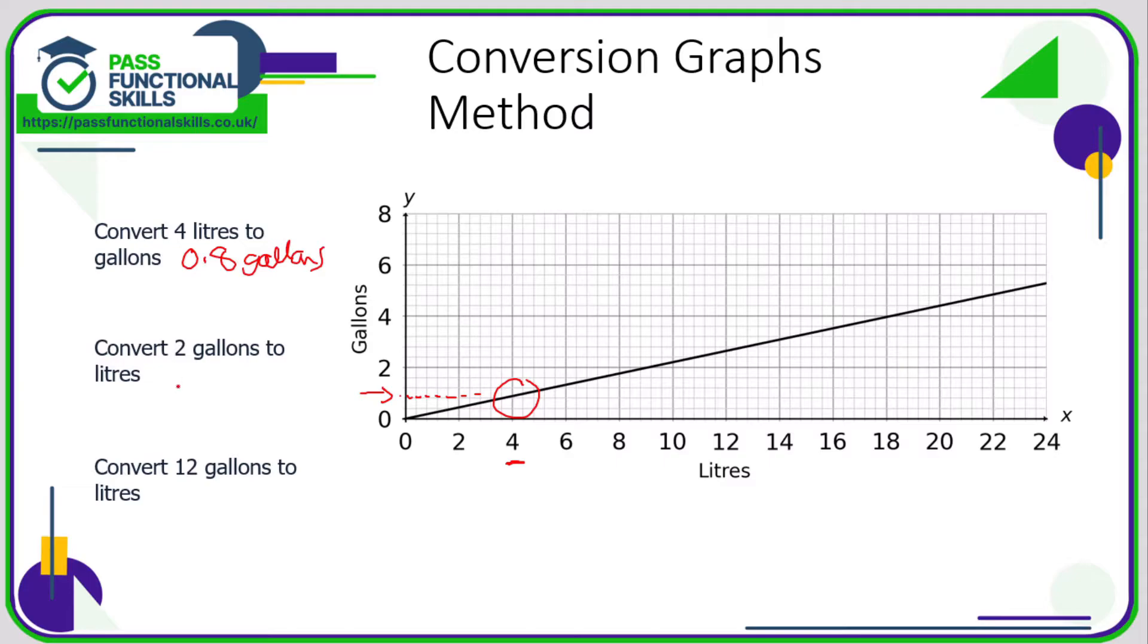We need to be careful that we're going from the correct axis. Gallons is up the side, so we need to start at two up the side. This is two gallons and go across to our graph and it hits—hard to tell exactly for me, it's halfway between these two lines. But we don't need to stress about it too much because in a test they'll normally accept a range of answers.